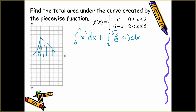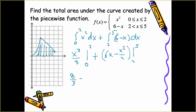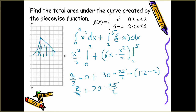Taking the anti-derivatives and evaluating: x cubed over 3 from 0 to 2, plus 6x minus x squared over 2 from 2 to 5. Plugging in 2 gives 8 thirds; plugging in 0 gives 0. For the second part, plugging in 5 gives 30 minus 25 halves; plugging in 2 gives 12 minus 4 halves, which is 12 minus 2 equals 10. So we have 8 thirds plus (30 minus 25 halves minus 10), which simplifies to 8 thirds plus (20 minus 25 halves). Getting common denominators and combining everything, you should end up with 61 over 6. Since everything was positive area, we didn't have to worry about taking absolute values.